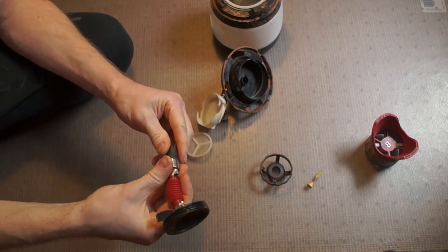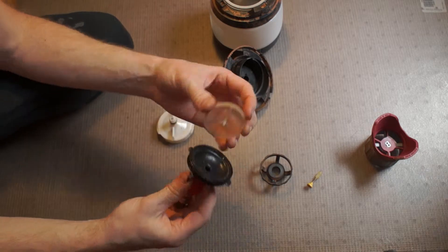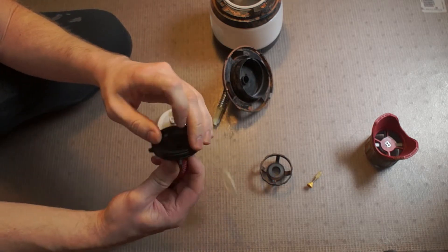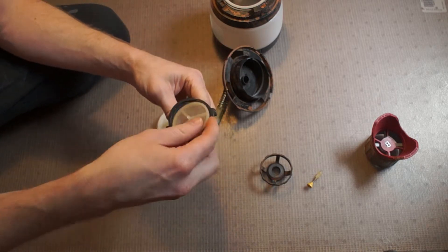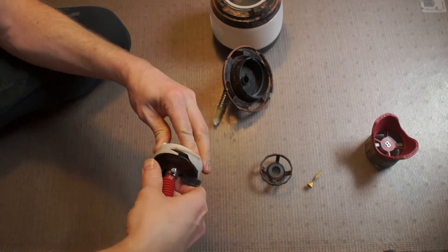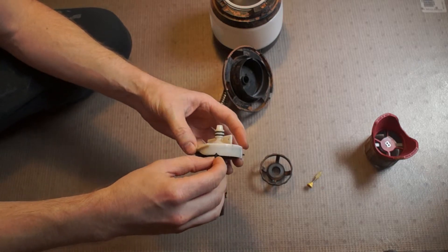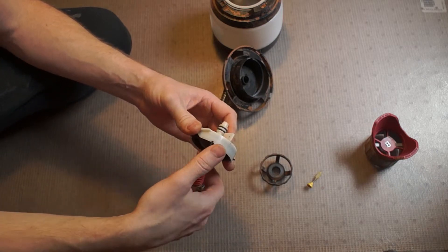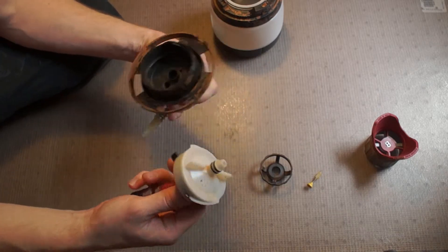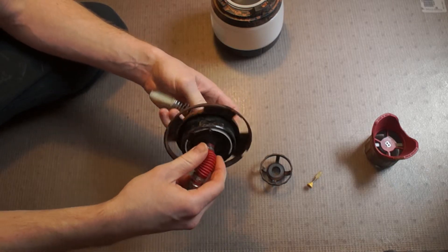That goes back on. The filter doesn't matter which way it goes, it can go either way. You want to make sure that's clean. Okay, and then we close it, twist it backwards like that. The black fins align with the groove on the white part of the filter housing, that goes in, twist, that's it, and it locks.